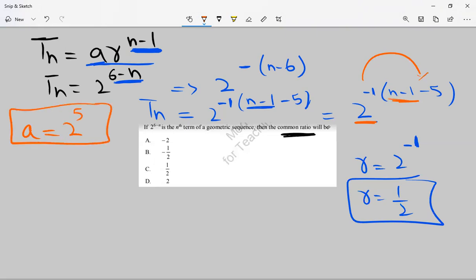Now counter check. Either you have calculated the right values or not. How you will check it? Tn should be equal to AR^(N-1). What we have calculated: 2 to the power 5, R is 1 upon 2, N-1. In the next step, this 1 power will go up, 2 to the power 5 minus 1, and then N-1.